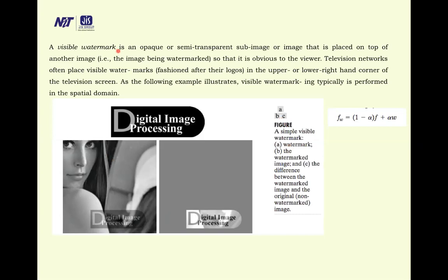A visible watermark is an opaque or semi-transparent sub-image or image that is placed on top of another image, the image being watermarked, so that it is obvious that viewer can view this. Television networks often place visible watermarks in the upper or lower right hand corner of the television screen.